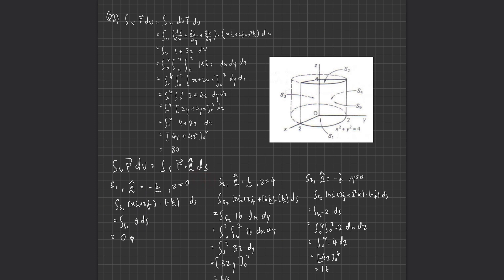Now I'll solve the triple integral side. The vector F changes to the divergence of F. Differentiating each component: the i-component gives 1, there is no y-component so it gives 0, and z² differentiates to 2z. The triple integration uses limits x from 0 to 2, y from 0 to 2, z from 0 to 4. Solving gives a final answer of 48.